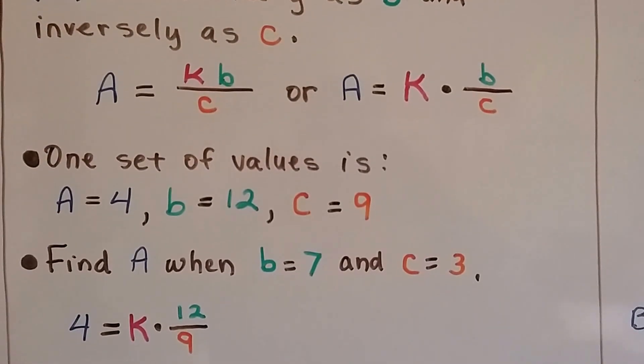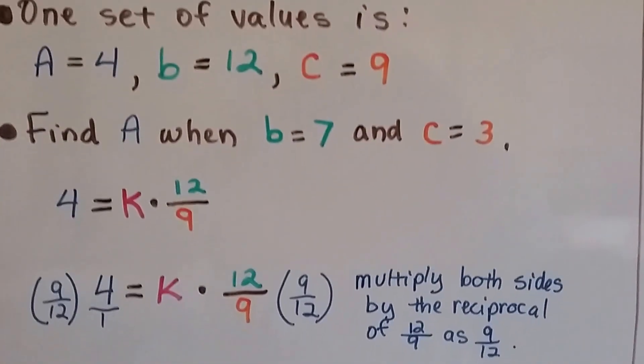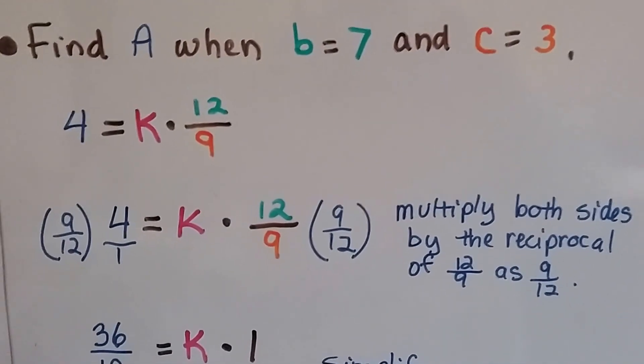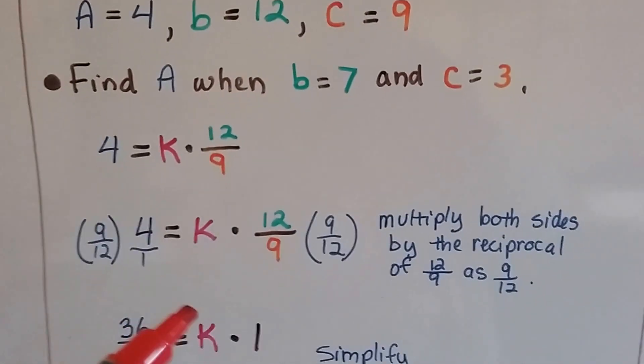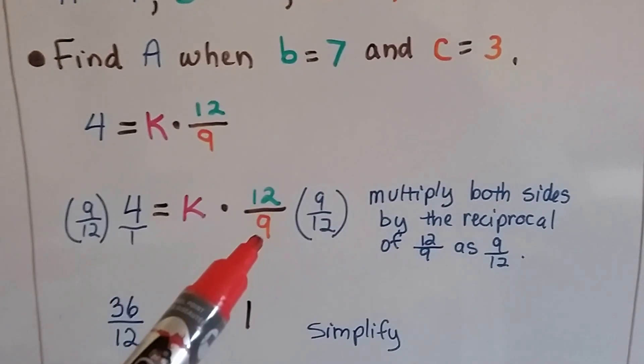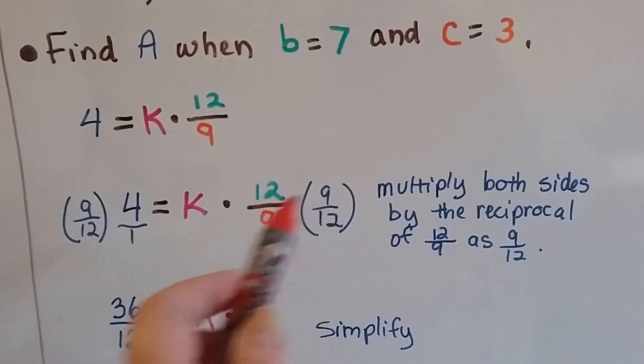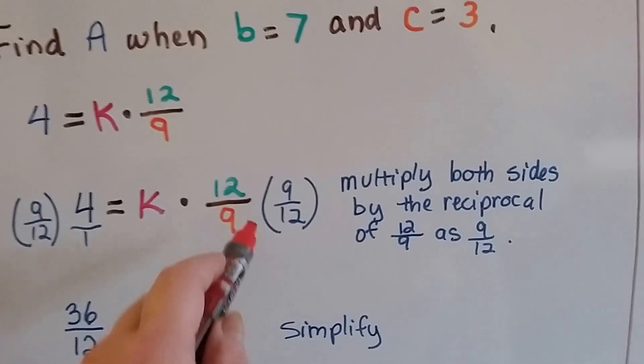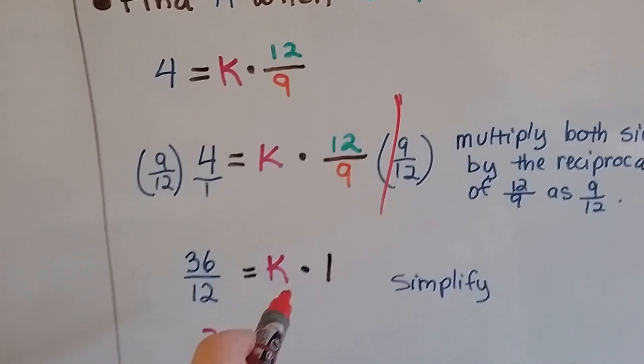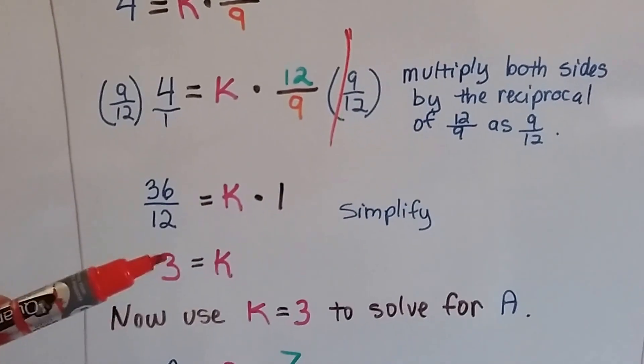We can find a when b equals 7 and c equals 3 by finding the value of k. So here we have our equation, 4 equals k times 12 over 9. That's for this first set of values. When we multiply both sides by the reciprocal of 12 over 9 as 9 twelfths on each side, this becomes a 1. 12 times 9 over 9 times 12 cancels out as a 1, and we end up with just k on this side. On this side we get 36 over 12, which is a 3. So now we know the value of k is a 3.